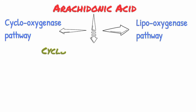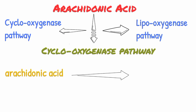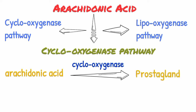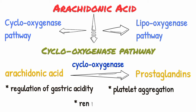Here we just focus on the cyclooxygenase pathway. In this pathway, arachidonic acid is converted by an enzyme called cyclooxygenase into prostaglandins, and these prostaglandins play an important role in the regulation of gastric acidity, platelet aggregation, and renal blood flow.